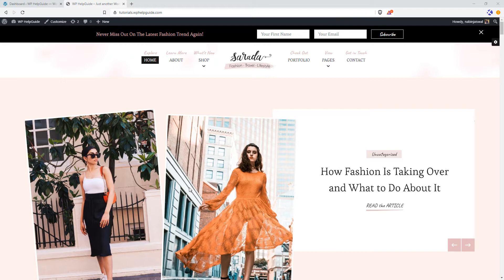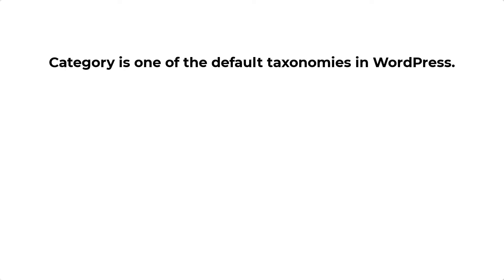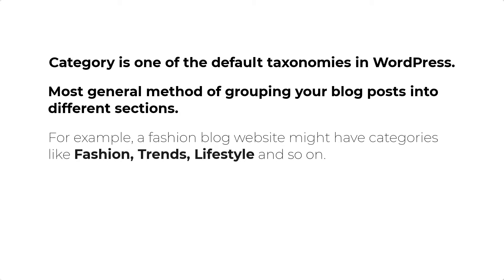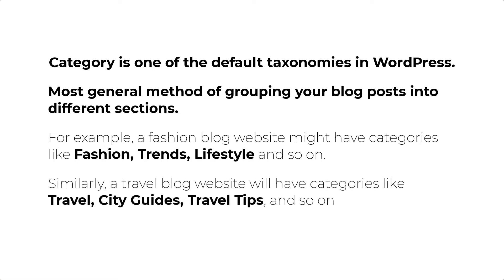Before we dive into the actual process, let's understand what categories are in WordPress and why they are important. Categories is one of the default taxonomies in WordPress. In simple words, categories are the most general method of grouping your blog posts into different sections. For example, a fashion blog website might have categories like fashion, trends, lifestyle, and so on. Similarly, a travel blog website will have categories like travel, city guides, travel tips, and so on.